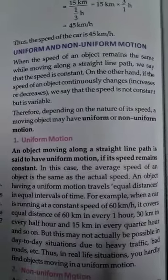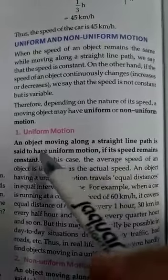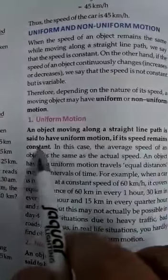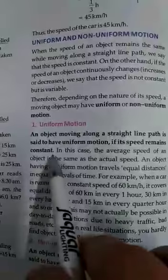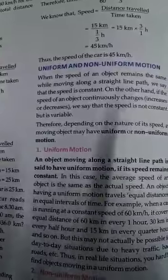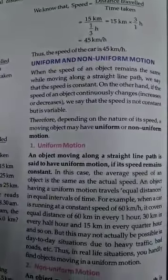Next, aap ka uniform and non-uniform motion. Non-uniform motion aur uniform motion me kya difference hai? Uniform motion: an object moving along a straight line path is said to have uniform motion if its speed remains constant. Agar koi bhi aap car... chaliye, main aapko ye wala next video me bataati hun. Ye video badi hi ho jayegi. Isi tariqe se.